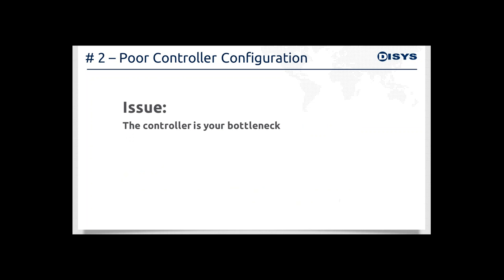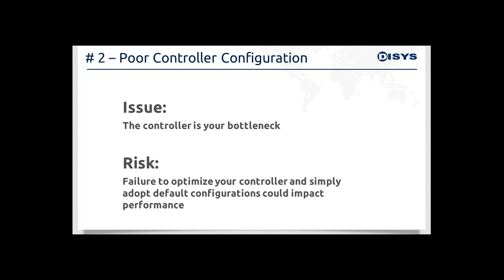Number 2: poor controller configuration. Most VDI platforms — XenDesktop, Horizon View, RDS — can function with a single controller. However, during boot and logon storms where hundreds of users connect at once, the controller, which is like the traffic cop for the environment, can and does become a bottleneck. This is why Citrix, VMware, and Microsoft recommend dividing controller functionality across multiple servers. For environments hosting more than a thousand virtual desktops, Citrix recommends separating the roles across five servers — all virtualized: a dedicated master controller, two XML controllers, and two StoreFront or web interface servers. This accomplishes two things: spreading the load increases capacity, and you achieve built-in fault tolerance and redundancy.